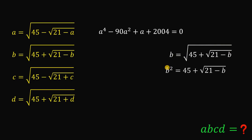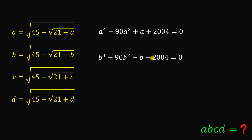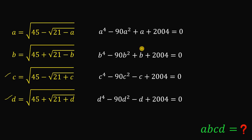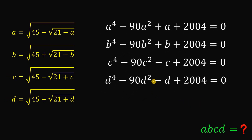For the second equation, we do the same thing: square both sides, subtract 45, and equate to zero, giving b to the fourth power minus 90b-squared plus b plus 2004 equals zero. We do the same for the third and fourth equations. The only difference in those results is that we have negative c and negative d, but everything else is identical.